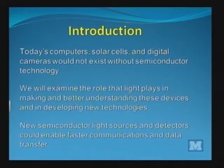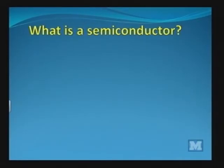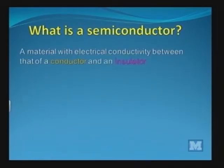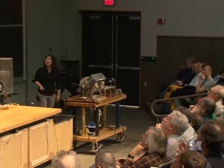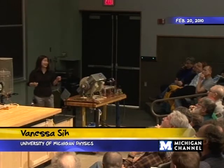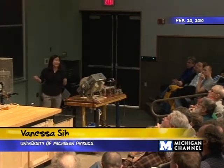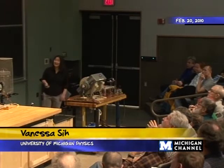These new semiconductor light sources and detectors could enable faster communications and data transfer. So the first question you may be asking is, what is a semiconductor? Well, one definition is that it just has a conductivity between a metal and an insulator, which is true. If you measure its resistance, it behaves somewhere between a conductor like a metal wire and an insulator, something like glass or plastic.